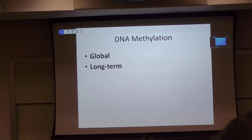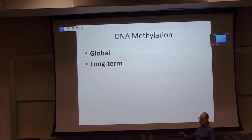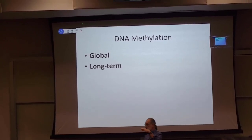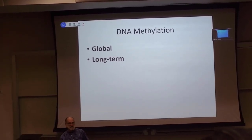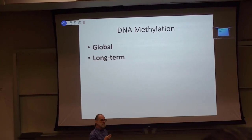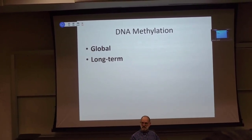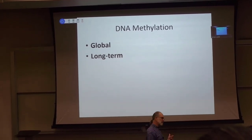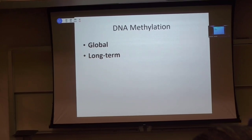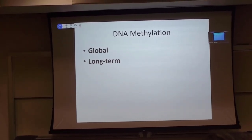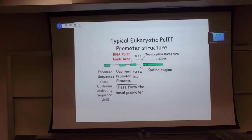DNA methylation is global — you're inactivating an entire chromosome, though sometimes you only inactivate a big part of the chromosome. It's long term because it's epigenetic, as the methylation tends to be repeated after cell division. It's very difficult to get rid of transcription patterns that are regulated by DNA methylation.